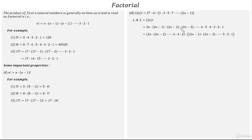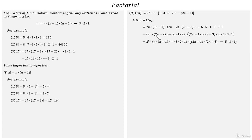Among the even factors, from each factor we are taking 2 common — from 2n we take 2 outside the bracket, from 2n-2 we take 2 outside the bracket, similarly from 6, 4, and 2 we take 2 as common. We get 2 raised to n into n into (n-1) — 6 becomes 3, 4 becomes 2, 2 becomes 1. This is nothing but n into (n-1) till 3 into 2 into 1, which is the product of first n natural numbers. So according to the definition of factorial, this can be written as factorial n.